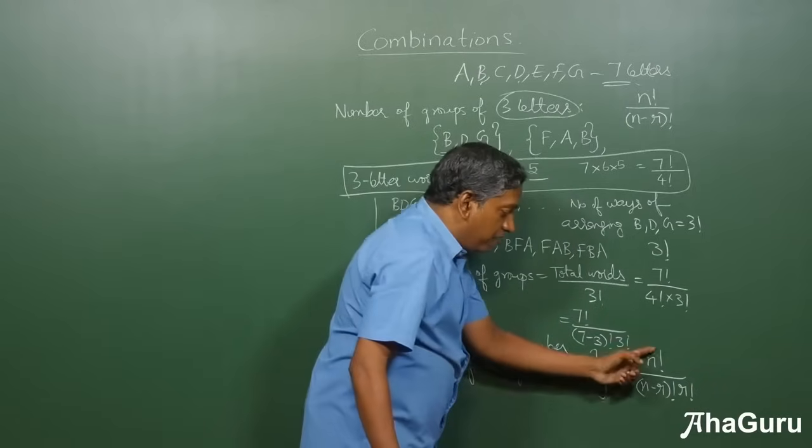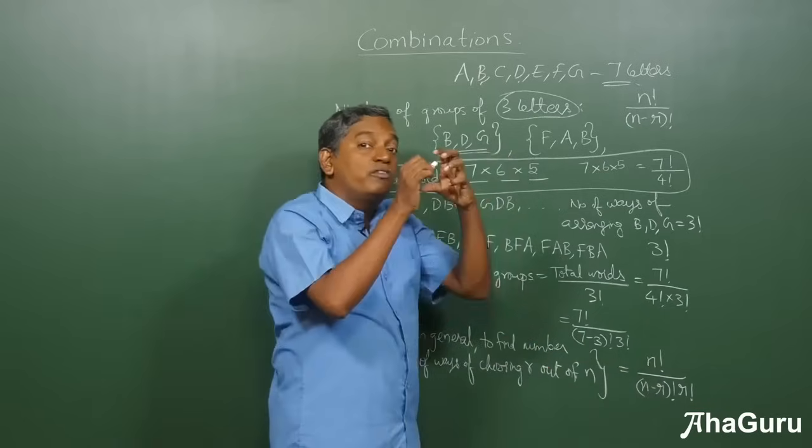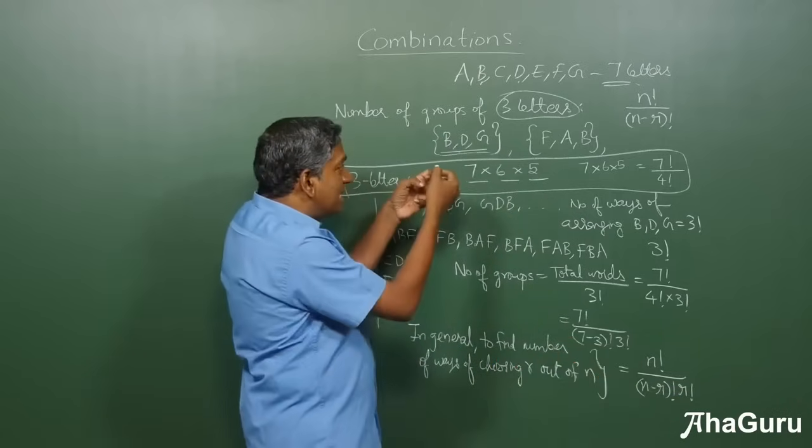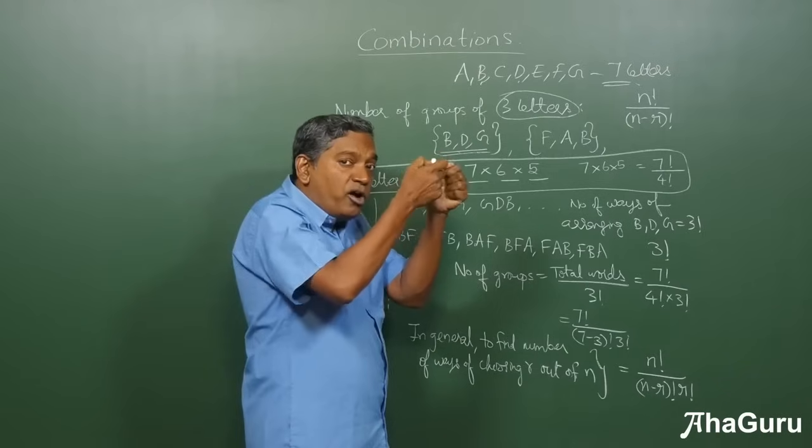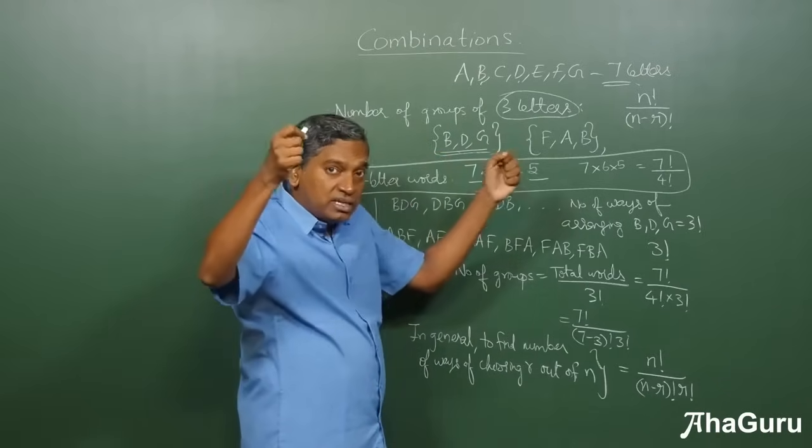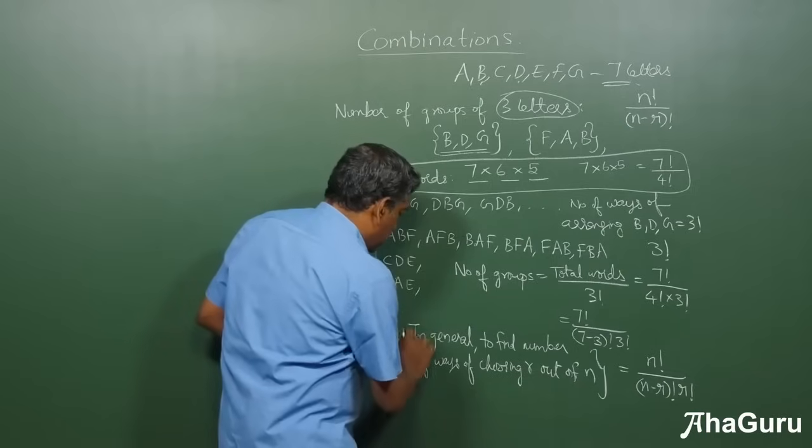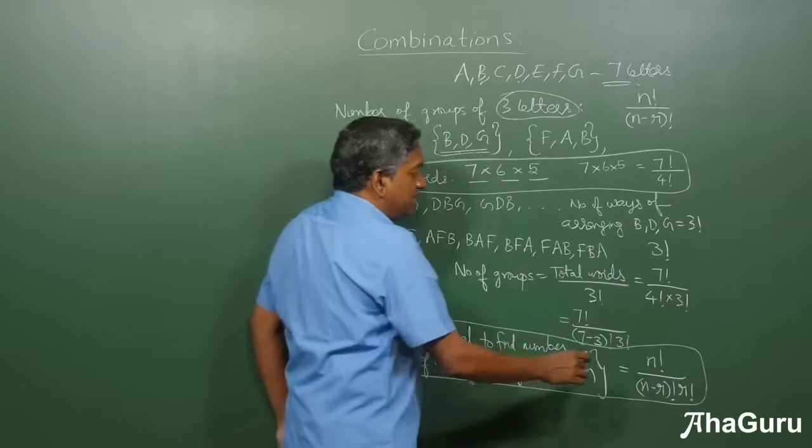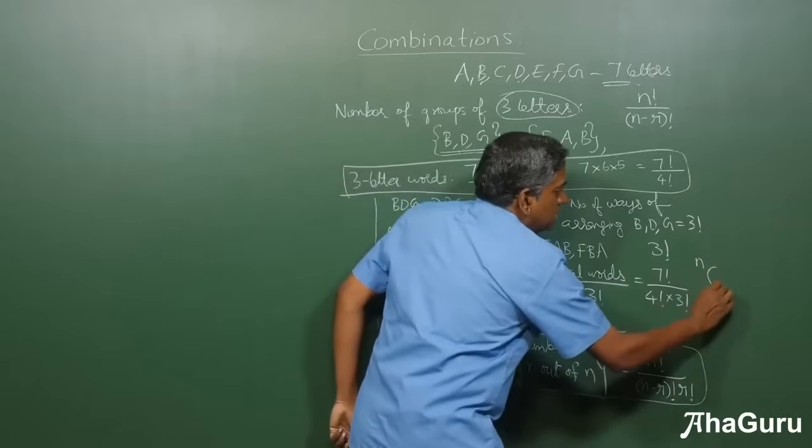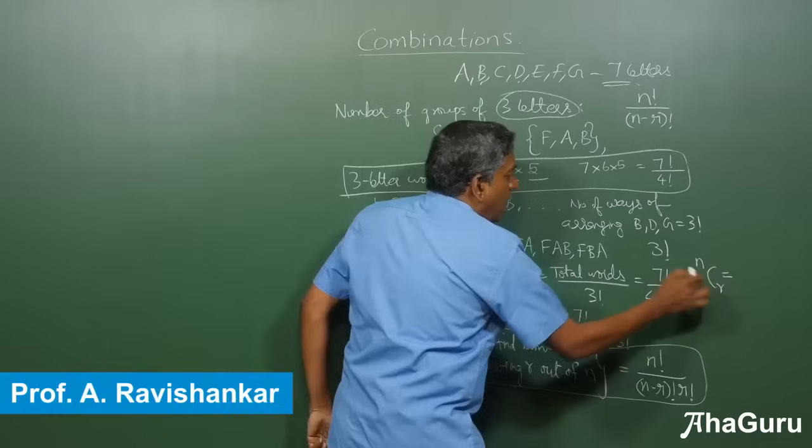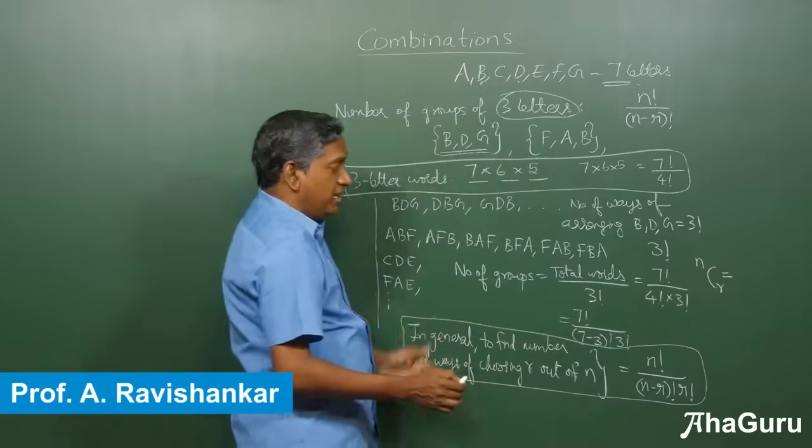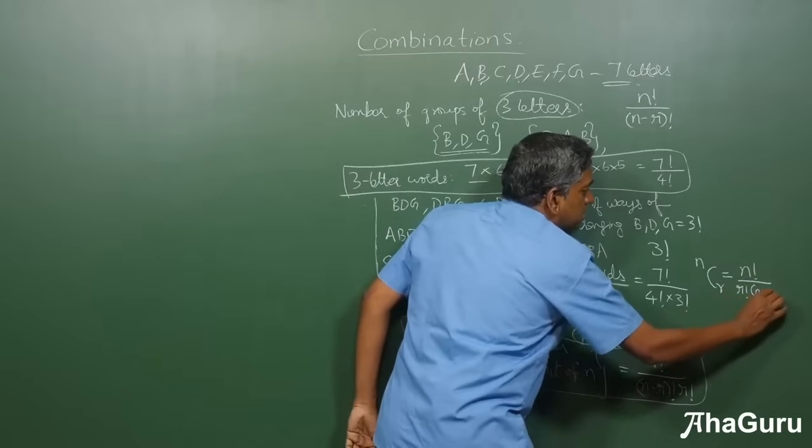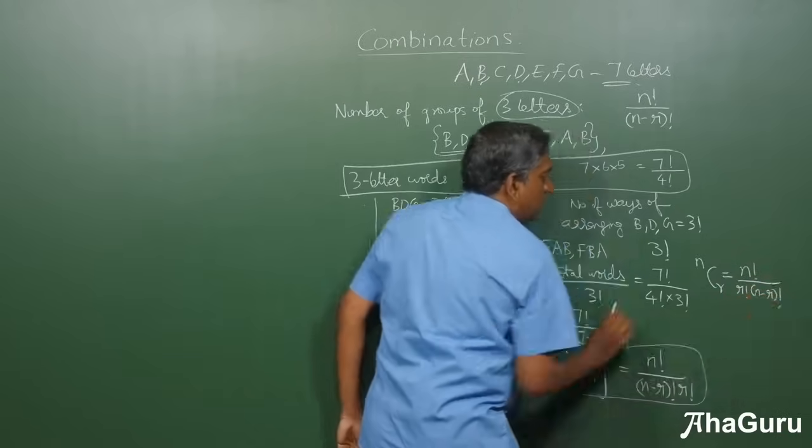Again, n factorial by n minus r factorial will be the number of words. You divide it by r factorial because you are selecting r letters and you can form r factorial words out of each group. Therefore, this is our required formula. We write this as nCr, n choose r. You are choosing r, right? That is n factorial by r factorial times n minus r factorial.